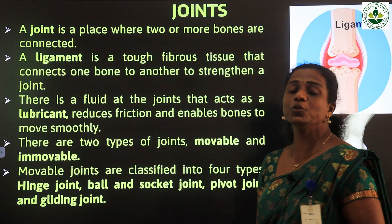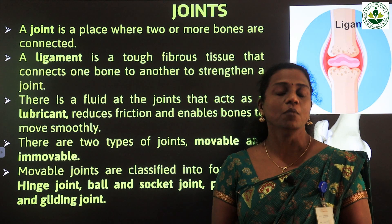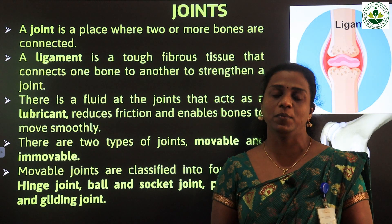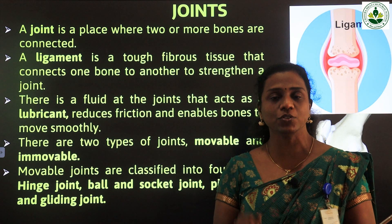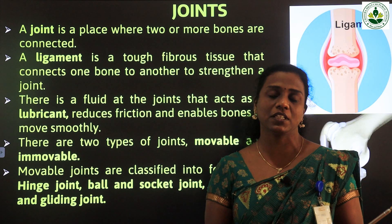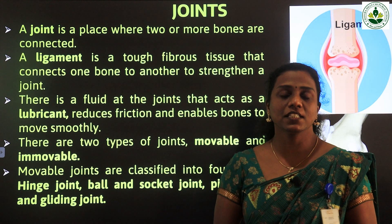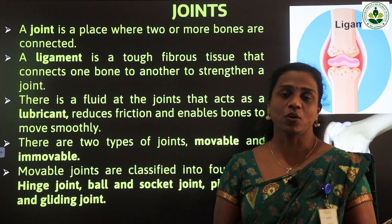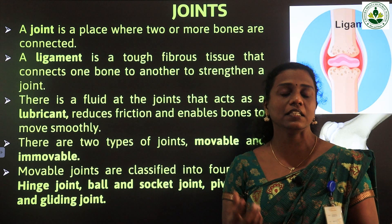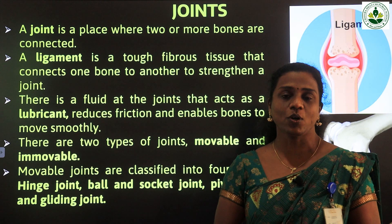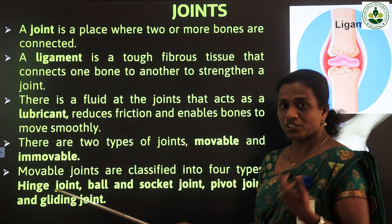There are two types of joints: movable and immovable joints. Most of the joints are movable; only a few are immovable. The immovable joints are mainly seen in the skull, teeth, and their sockets. All the remaining joints are movable.